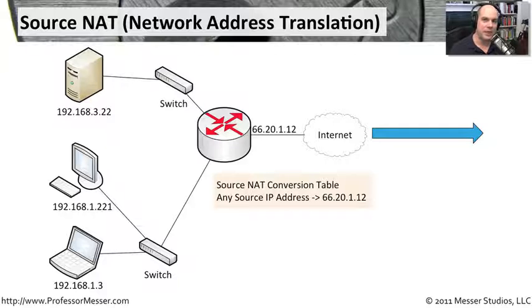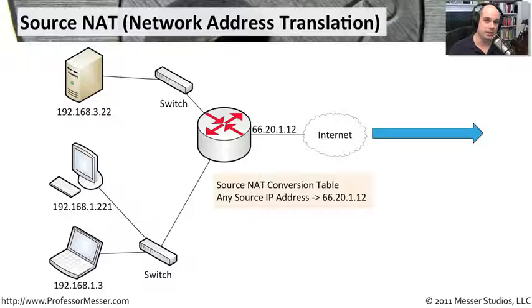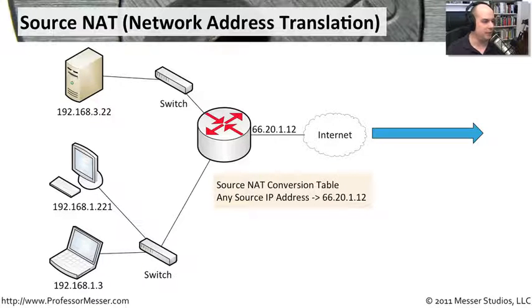We can have hundreds or thousands of people on our network, all with private IP addressing. But when they access the internet, they're all accessing it through a series of IP addresses that we as security people would probably administer. This is a good example of this.